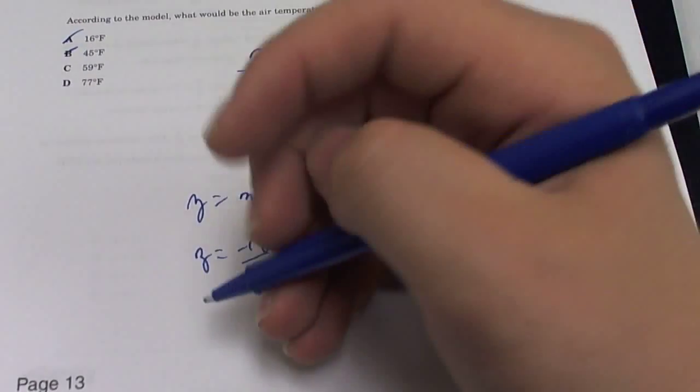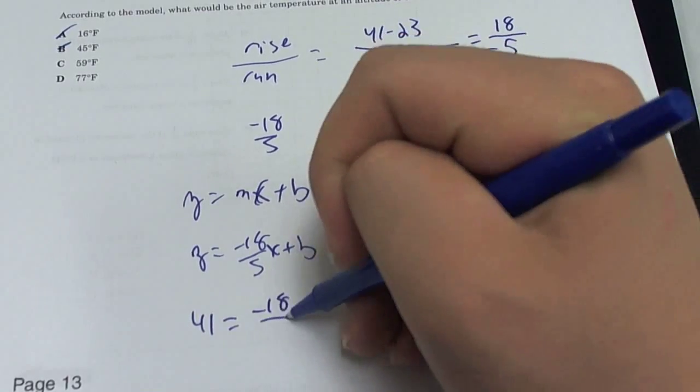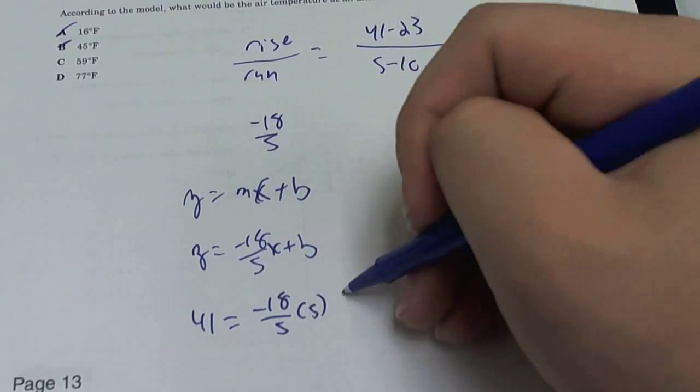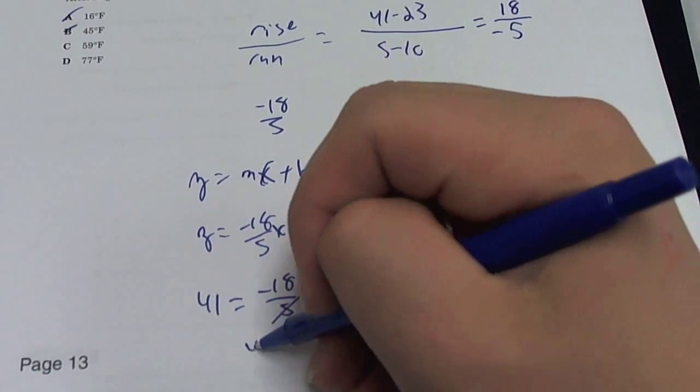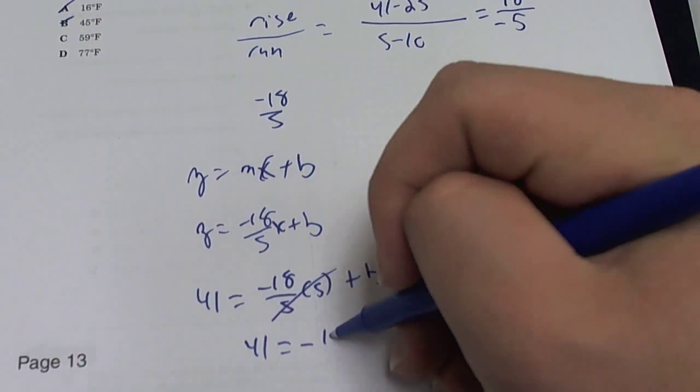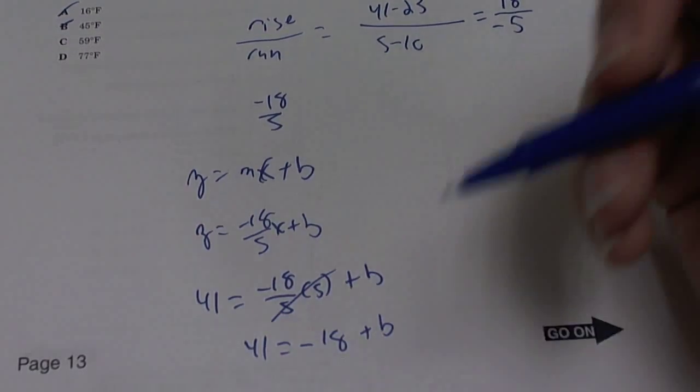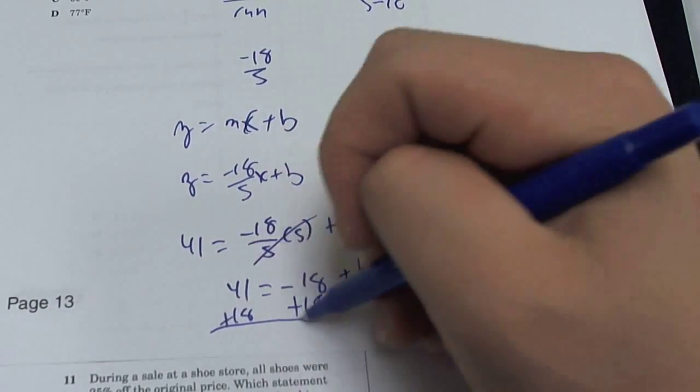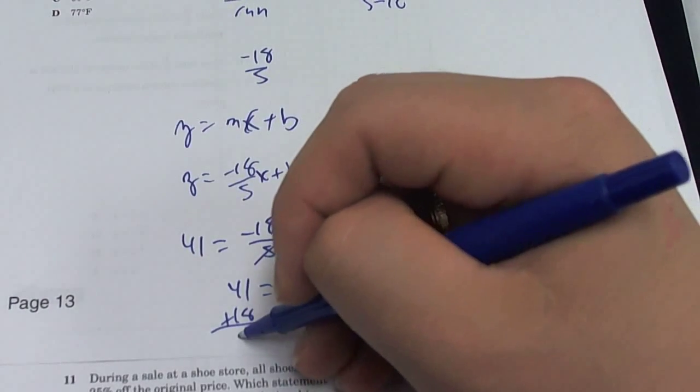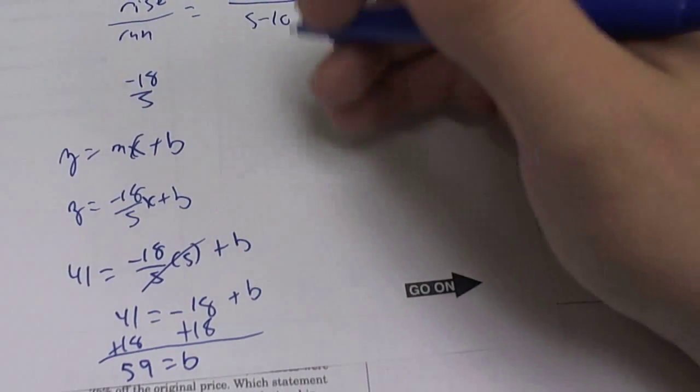Now we plug in a point (5, 41). So 41 is equal to negative 18 over 5 times 5 plus b. The 5s cancel out, so we're left with 41 is equal to negative 18 plus b. Add 18 to the other side, plus 18, and you get 59 is equal to b.